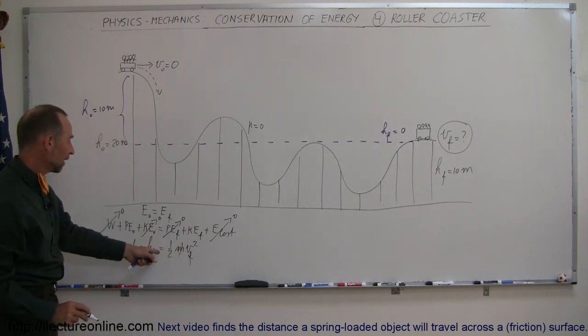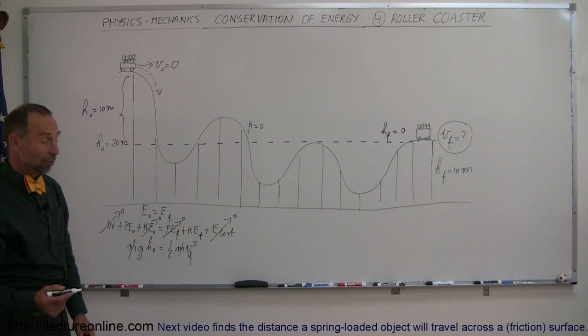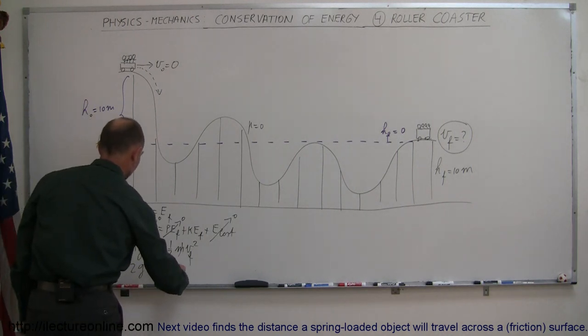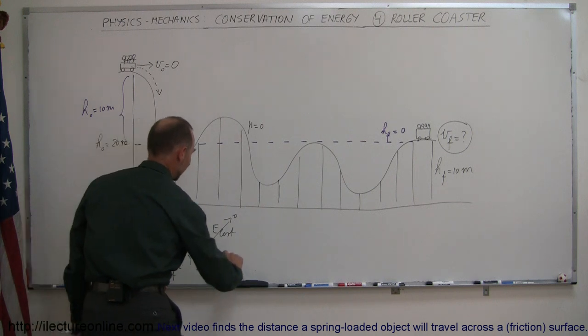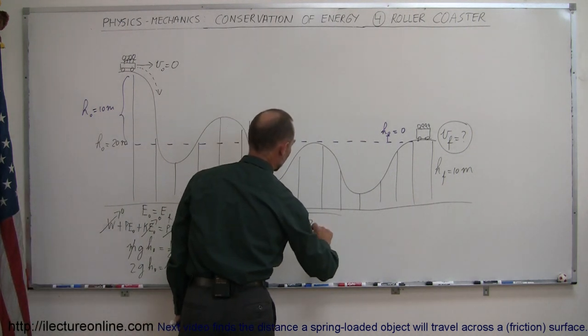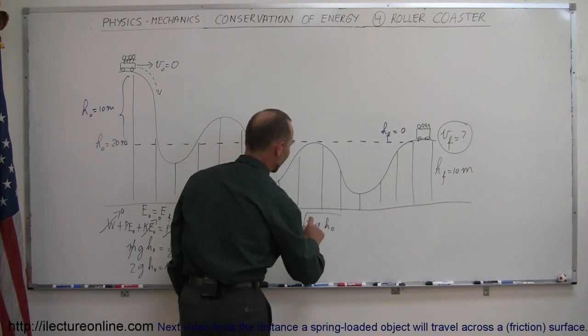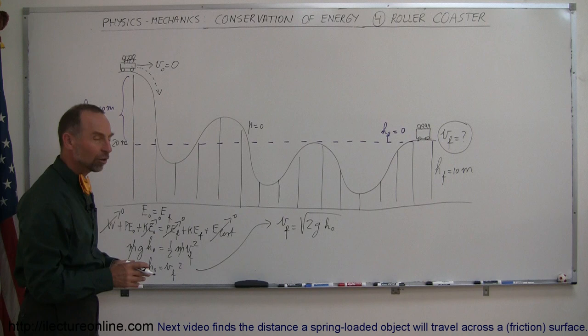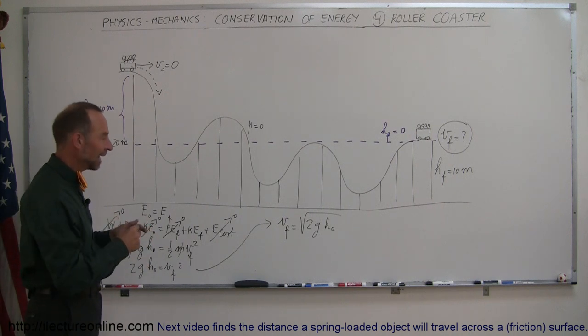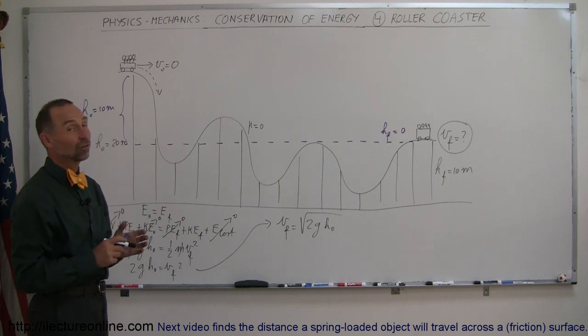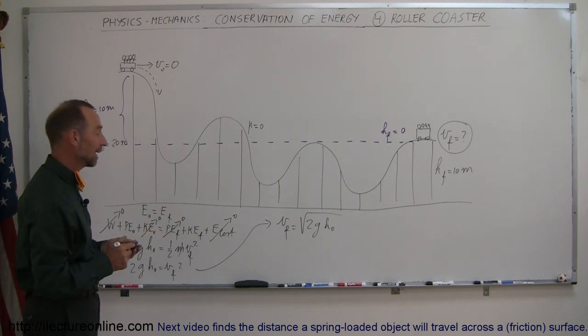And then solving that for v final I multiply both sides by 2 so I get 2gh initial equals v final squared and then finally we can say that v final is equal to the square root of 2gh initial, and that's actually a very common result when we solve for velocities and kinetic energies. Notice that the square root of 2gh is going to appear quite a bit in the next so many chapters.